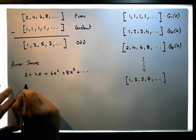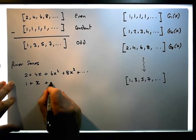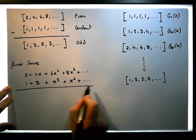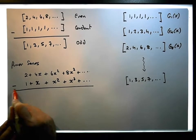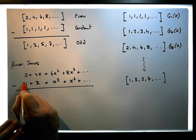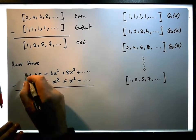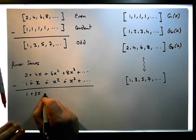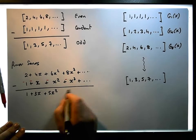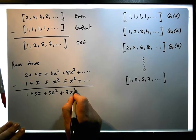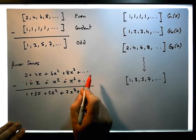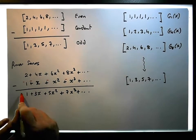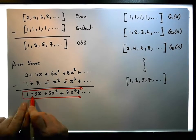The power series for the constant sequence is 1 + x + x² + x³ + x⁴ + ... When we subtract these term by term — all the constant terms become negative — we get: 2−1=1, 4x−x=3x, 6x²−x²=5x², 8x³−x³=7x³ + ... So we can see that when we take the constant power series away from the even power series, we end up with the power series of the odd numbers.